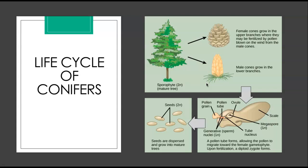Fertilization and seed development is a long process in pine trees — it might take up to two years after pollination. The seed formed contains three generations of tissue: the seed coat from the parent plant tissue, the female gametophyte that provides nutrients, and the embryo itself. To summarize, the female megaspore and the male microspore — both haploid — combine to produce the diploid seed that can turn into the diploid sporophyte, or the mature tree.